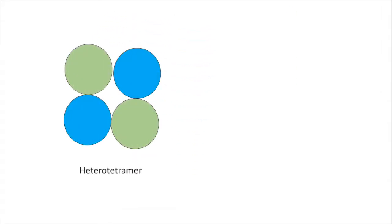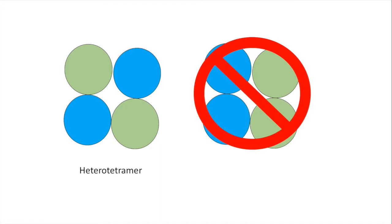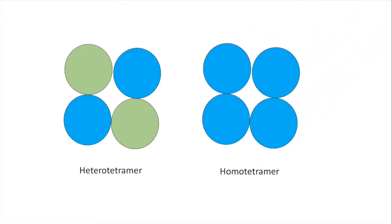AMPA receptors can be heterotetramer, meaning not all subunits are identical. For AMPA receptors, heterotetramers are made out of four polypeptides and must be in this arrangement. This heterotetramer is preposterous and does not exist in nature. AMPA receptors can also be homotetramer, meaning all subunits are identical.